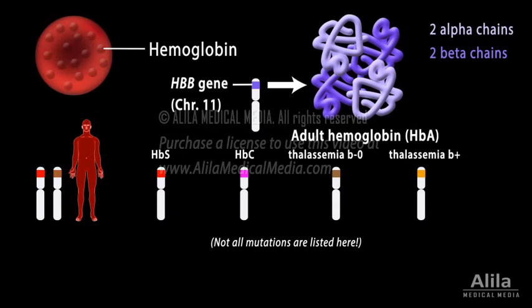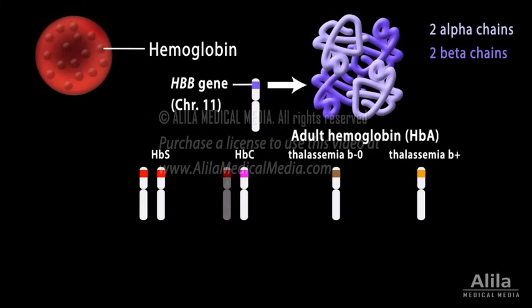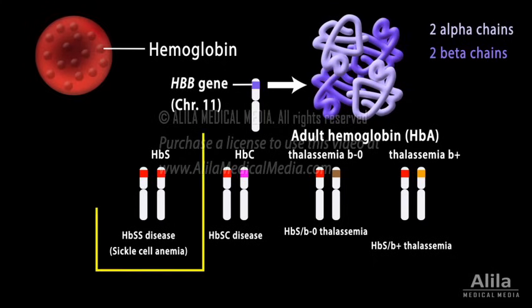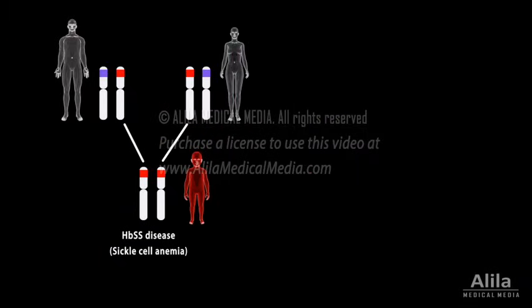The disease develops when both copies are mutated, producing no normal beta globin. The 2 copies may be mutated differently, producing 2 different forms of abnormal beta subunits in the same person. Various combinations of these mutations produce different forms of sickle cell disease, but the most common and also most severe, called sickle cell anemia, is caused by 2 copies of the same mutation, producing the mutated hemoglobin S. Each copy comes from a parent, and the 2 parents each carry 1 copy of the mutated gene but typically do not show any symptoms. This pattern of inheritance is called autosomal recessive.